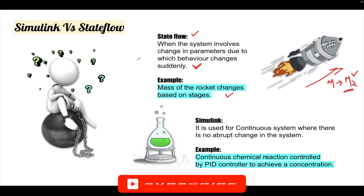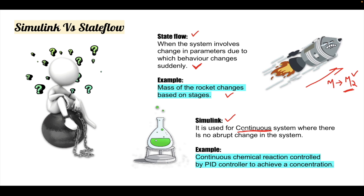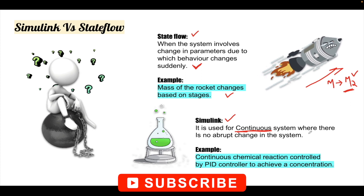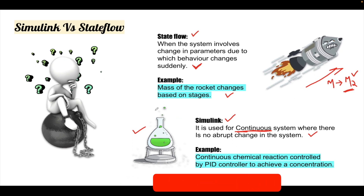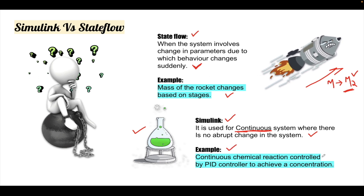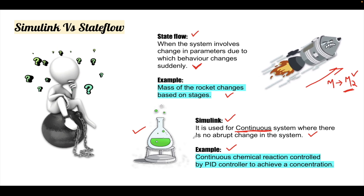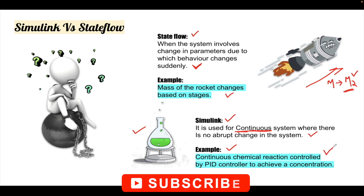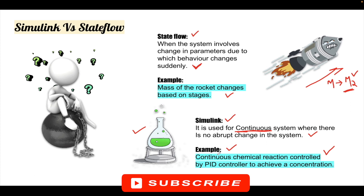The next question is: where should I use Simulink? Simulink can be used for a continuous system. If a system is continuously varying with time and there is no abrupt change happening in the system, then I will be using Simulink. Consider a chemical reaction — if I mix two chemicals, the reaction will happen continuously over time and there will be no abrupt change in the state unless there is a catastrophic reaction. In this case, I will use Simulink because the system varies continuously with no abrupt change involved.